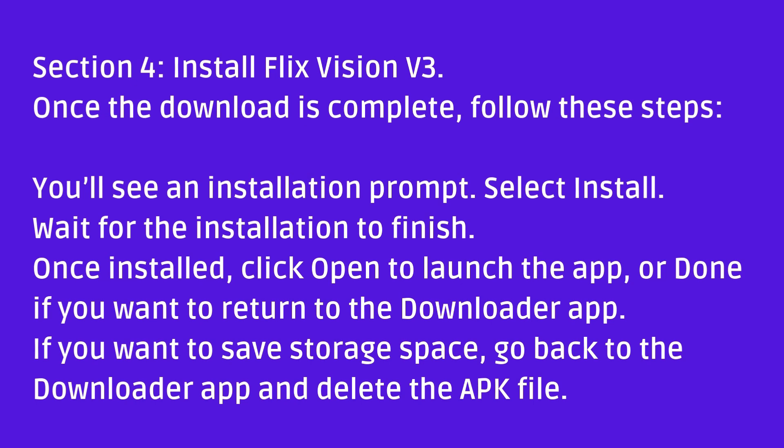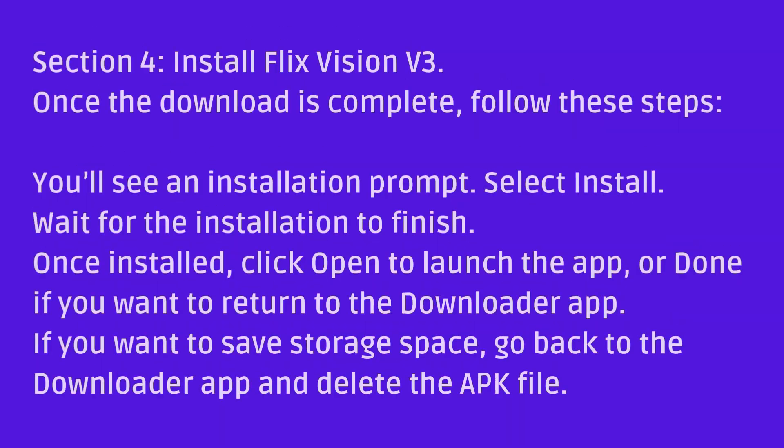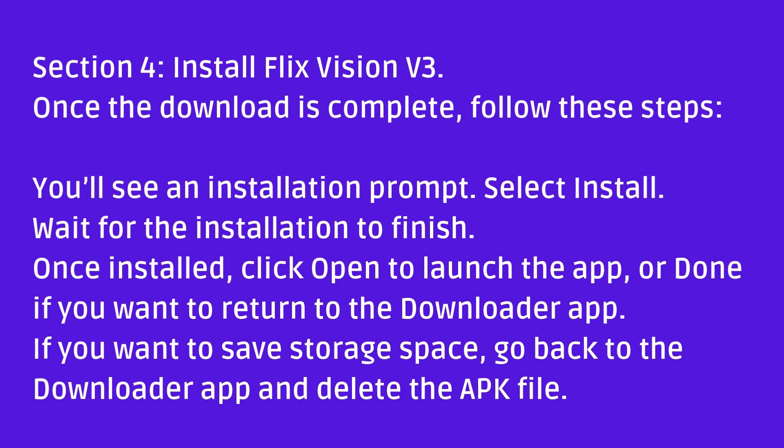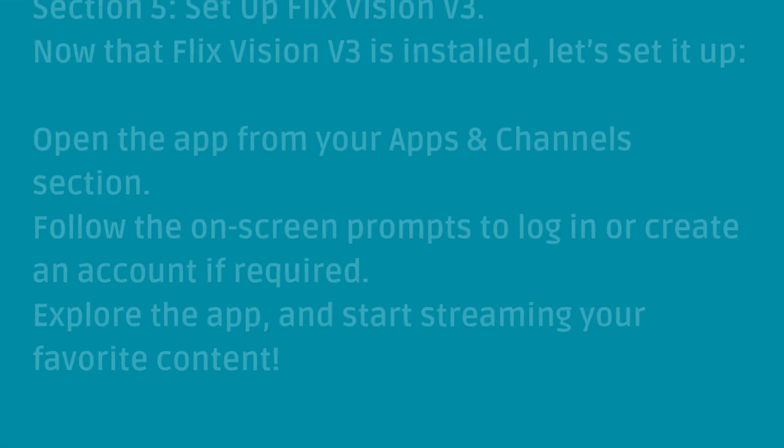Install FlixVision V. Once the download is complete, follow these steps: you'll see an installation prompt — select Install. Wait for the installation to finish. Once installed, click Open to launch the app, or Done if you want to return to the Downloader app. If you want to save storage space, go back to the Downloader app and delete the APK file.